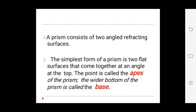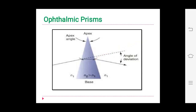A prism consists of two angled refracting surfaces. The simplest form is two flat surfaces that come together at an angle at the top. The apex is located at the top of the prism, where the flat surfaces are inclined at a finite angle. This position is called the apex. The wider bottom of the prism is called the base, which has a rougher surface.